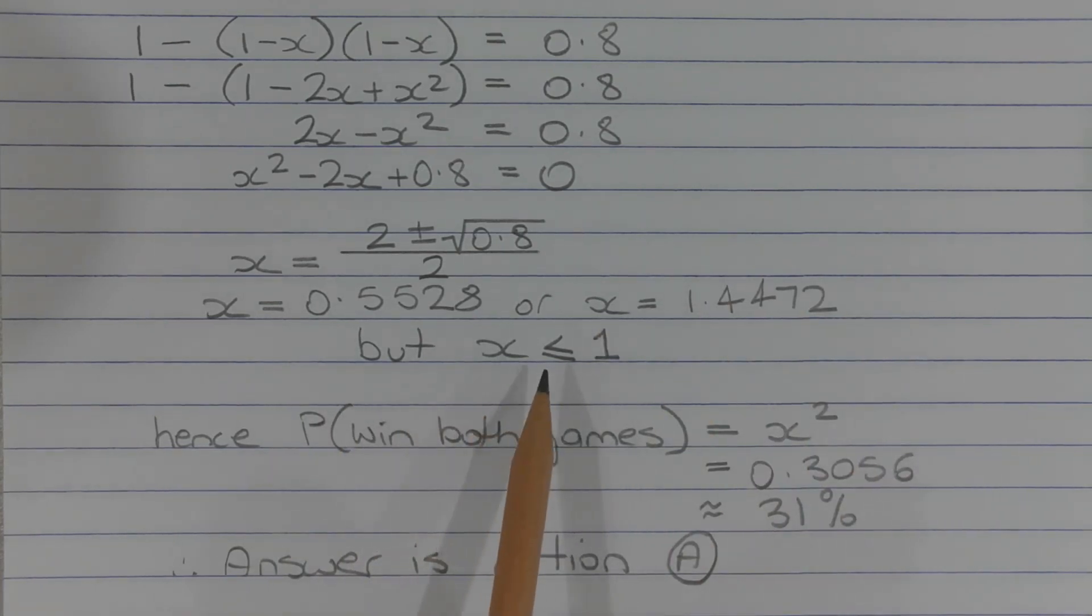But x must be less than or equal to 1 since x represents the probability of winning one game and probabilities must be less than or equal to 1.